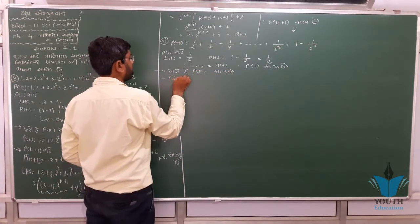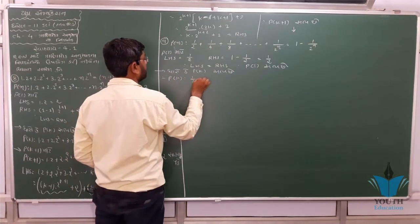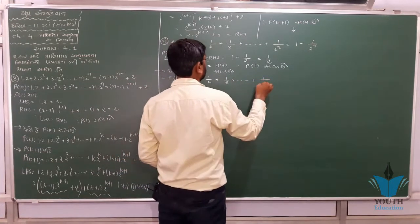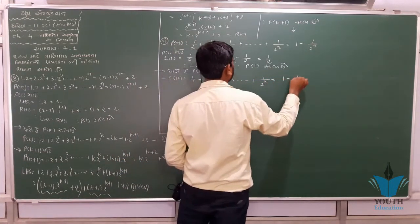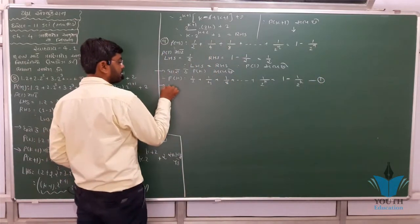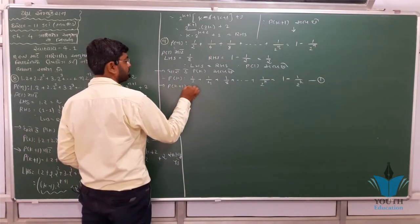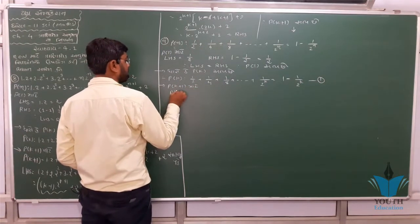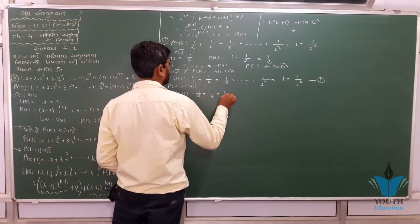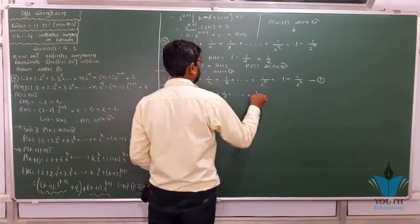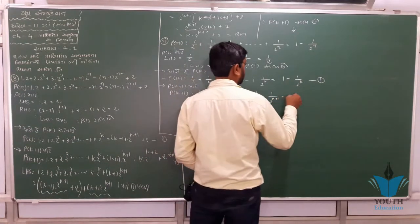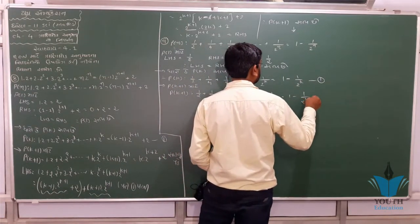P(k): 1/2 + 1/4 + 1/8 + ... + 1/2^k = 1 - 1/2^k. Now P(k+1): 1/2 + 1/4 + 1/8 + ... + 1/2^k + 1/2^(k+1) = 1 - 1/2^(k+1).